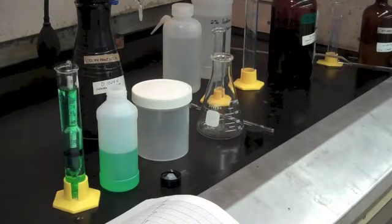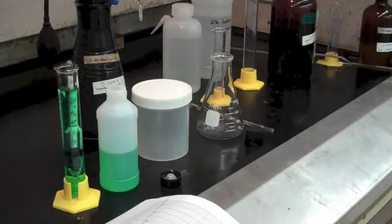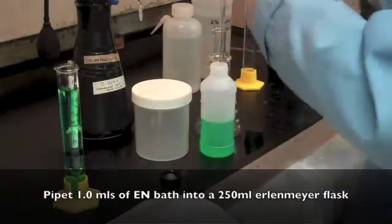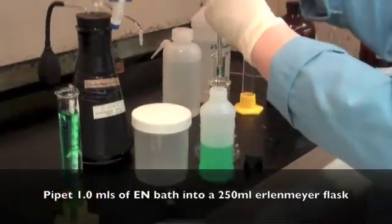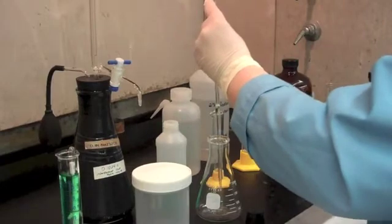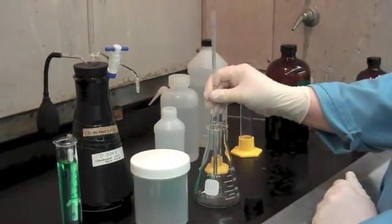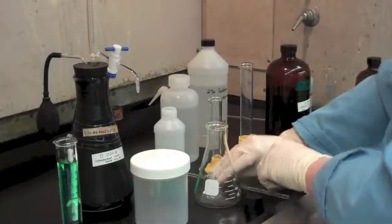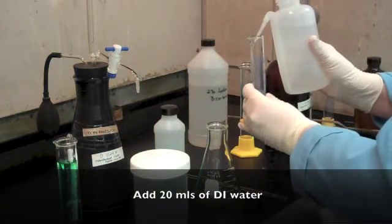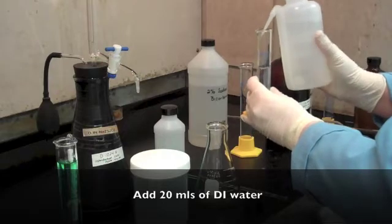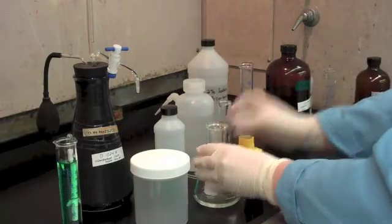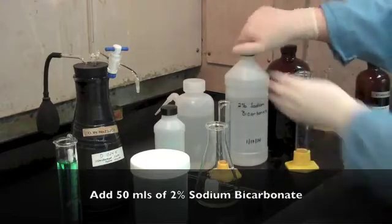Now I'm going to show you how to do the titration method to determine your bath age. We're going to take our bath and pipette 1 milliliter into an Erlenmeyer flask. Then we'll add 20 milliliters of DI water and 50 milliliters of 2% sodium bicarbonate.